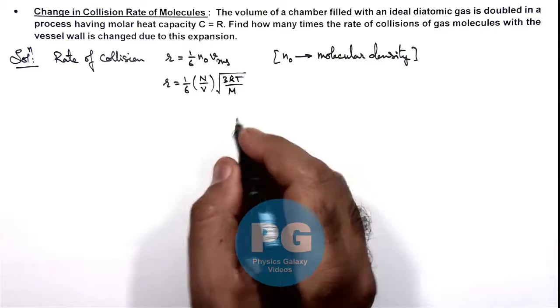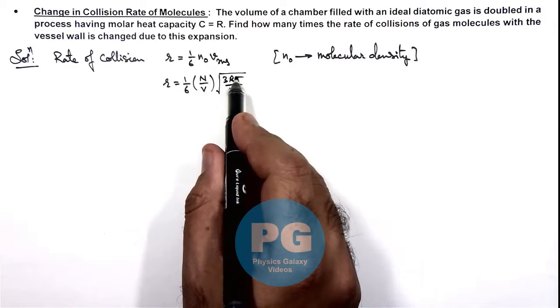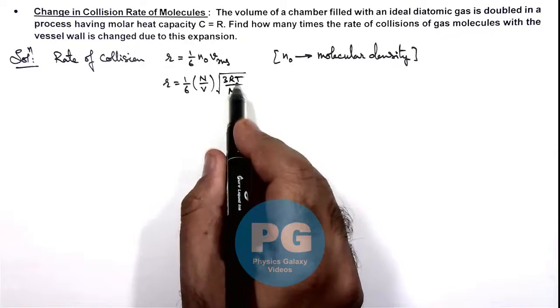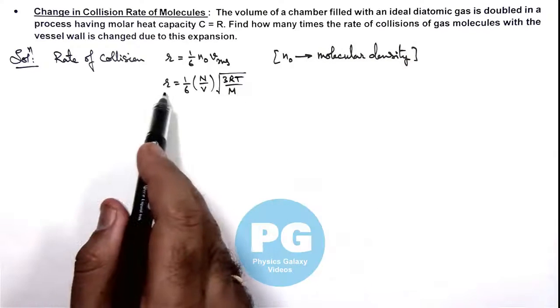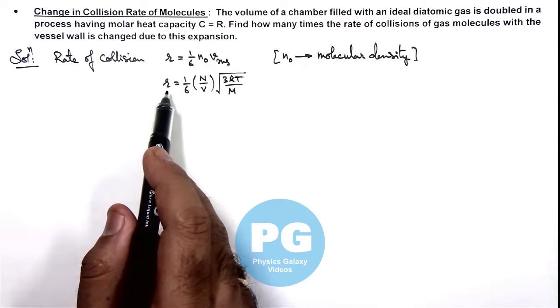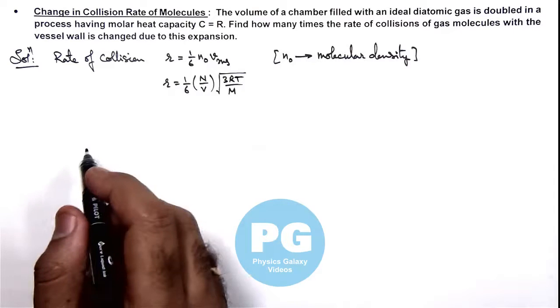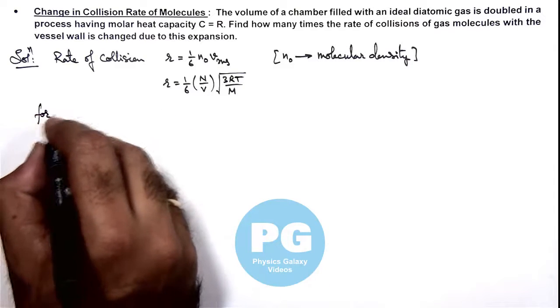So in this situation we wish to calculate the change in temperature when the volume is doubled will get the change in the rate of collisions. Now in this situation we can see for a process, for a polytropic process.